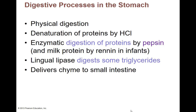Some digestive processes that happen in the stomach: some of it is physical digestion — the physical churning and breaking apart the food. Some of it is chemical — we're starting to break down proteins because of the hydrochloric acid, which itself denatures the protein and starts to break it down. We're also starting to have enzymes breaking things down.